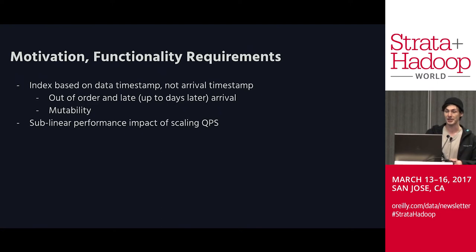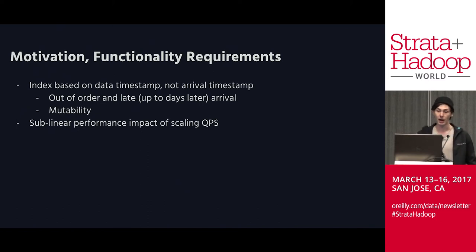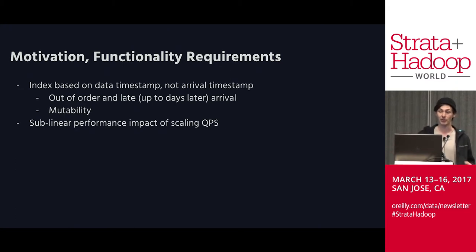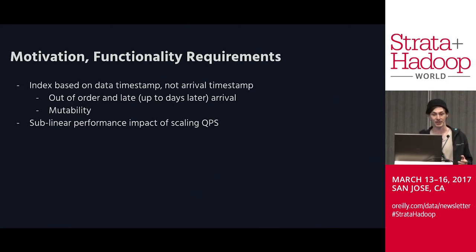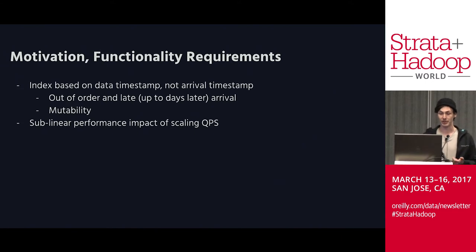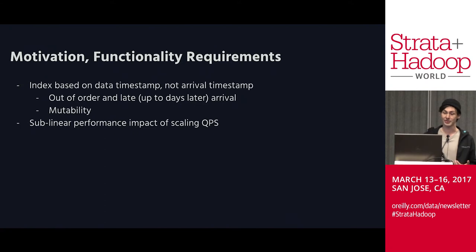Before diving into the technical implementation, let's cover some requirements that defined our decision-making. Since we're dealing with time series aggregates, we need to pick some timestamp attribute on the data for all bucketed aggregations, and we require support for a timestamp that does not have strong ordering with respect to arrival time. For example, using the point in time a trip was requested for its bucketed aggregations rather than when the trip was completed — we don't have all the information about a trip until it's complete, so we end up with out-of-order arrival. Also, that trip needs to remain mutable — people commonly rate their last driver when they take their next trip, which could be days or weeks later.